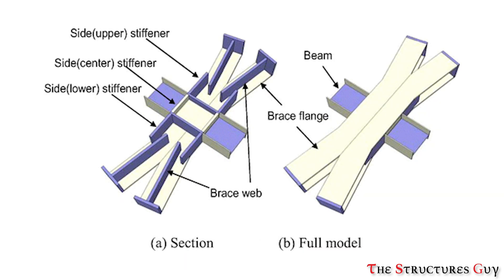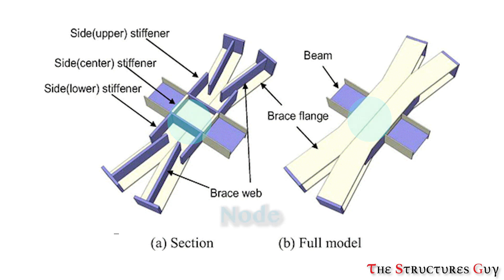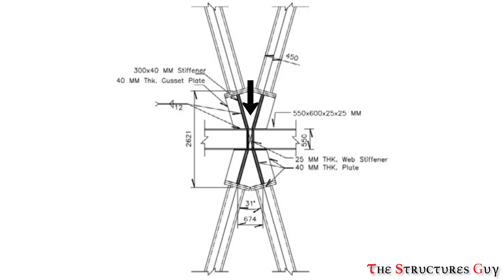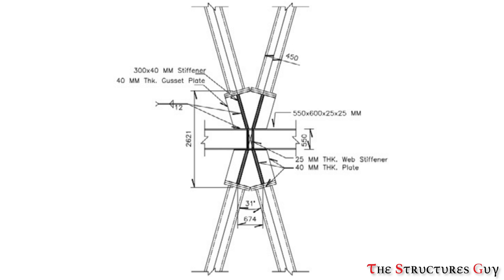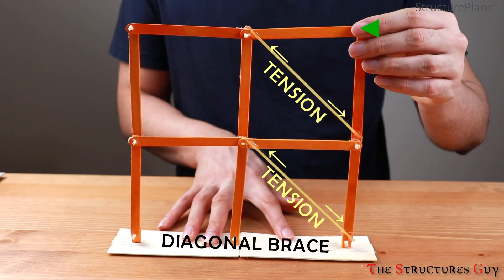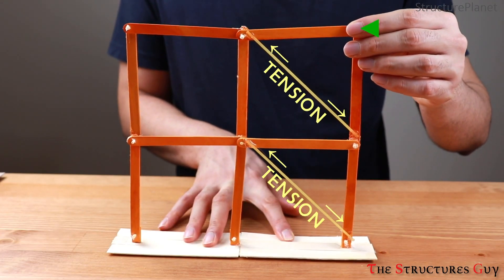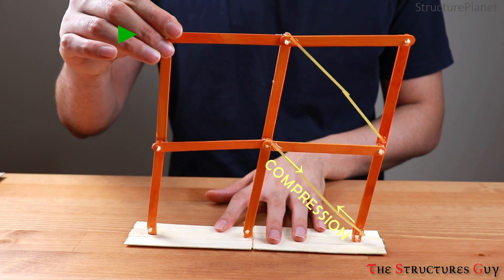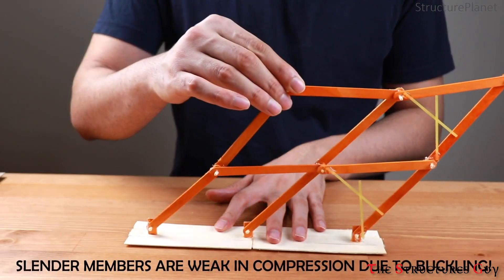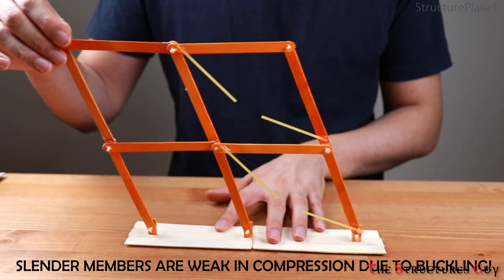One important factor when designing diagrid structures is the nodes, which are defined as the intersections or the connections of the diagonals. Those nodes need to resist vertical loads and horizontal shear. The nodes are joined by means of bolting or welding depending on the diagrid structure. It is known that the structure is as strong as its weakest link, which is why nodes have to be designed properly to ensure structural safety.